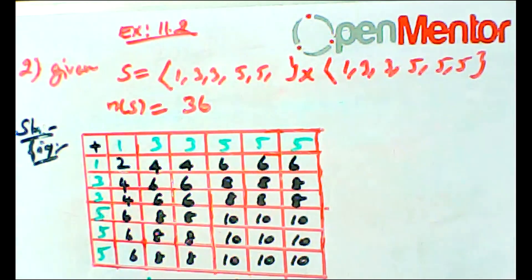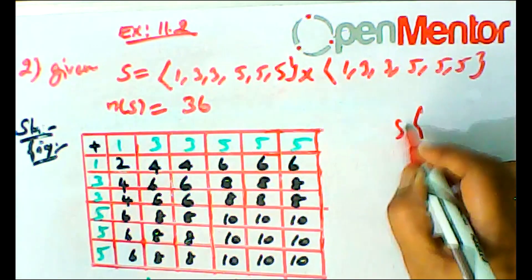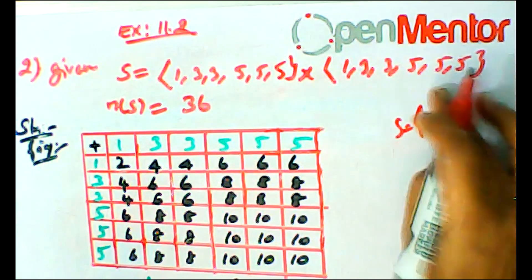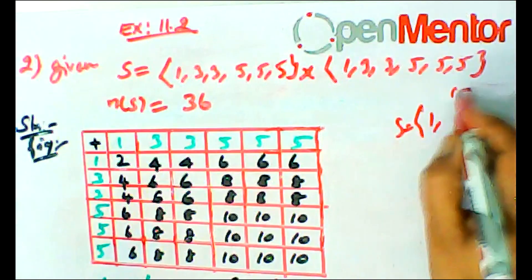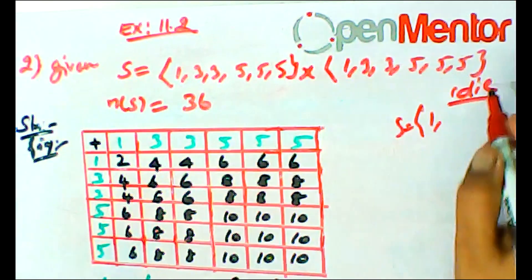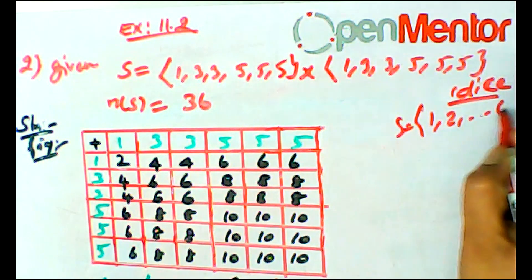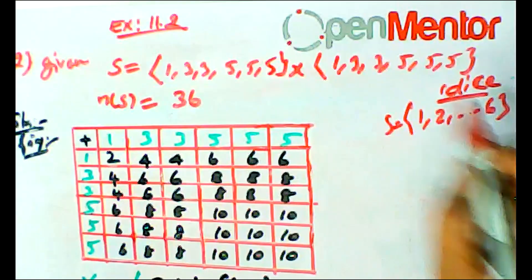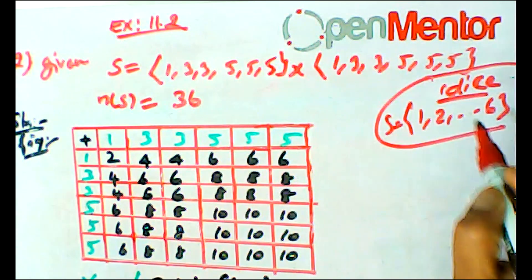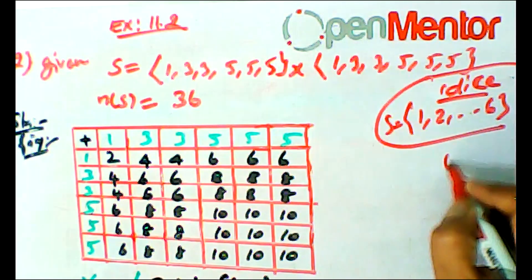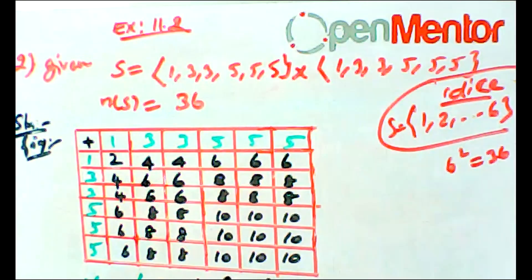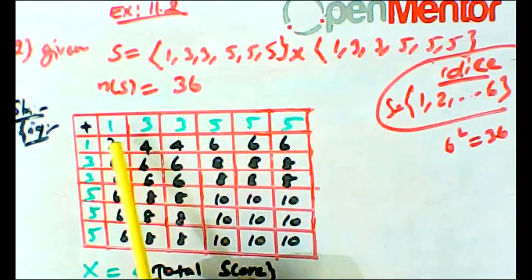The total sample space n(S) for one die is 6, so for two dice using the formula, n(S) is equal to 6 times 6, which is equal to 36.